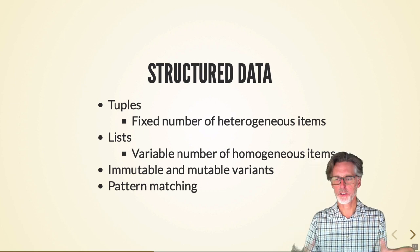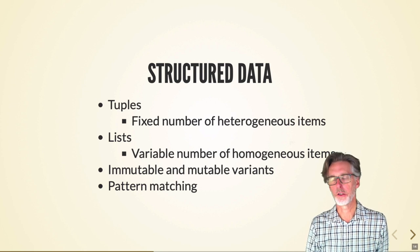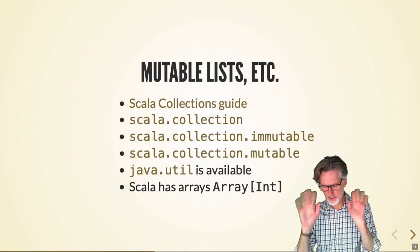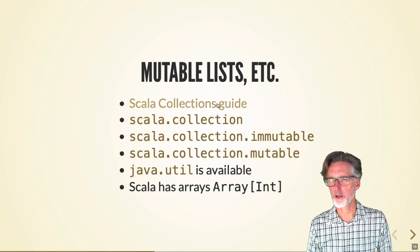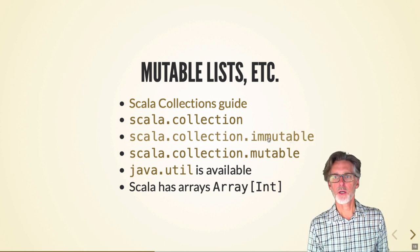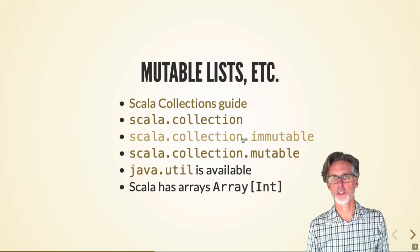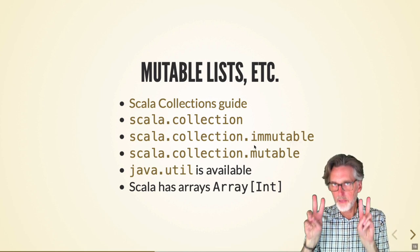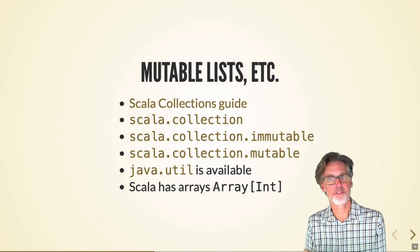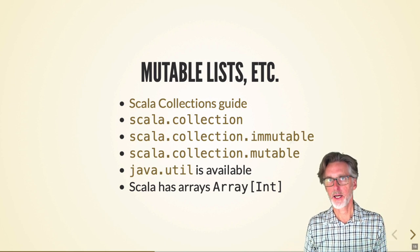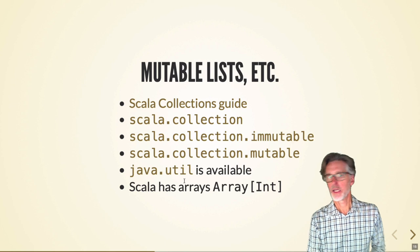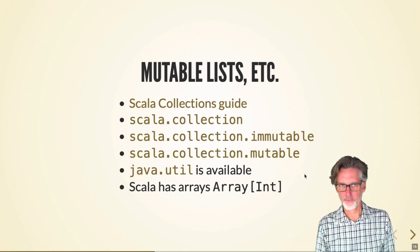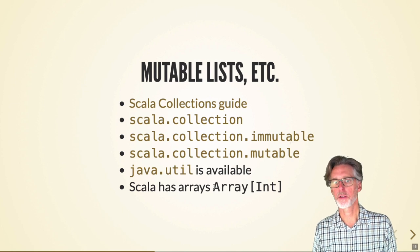Scala has variants for immutable and mutable types, and significantly has a feature called pattern matching which allows us to interrogate structured data in a straightforward way. Scala's entire collections hierarchy is quite large. For now we'll focus on the immutable side. Unlike Java where immutable things are simply mutable ones with certain methods removed, Scala has two completely separate type hierarchies for mutable and immutable structures. Scala also supports native Java arrays through its array types.